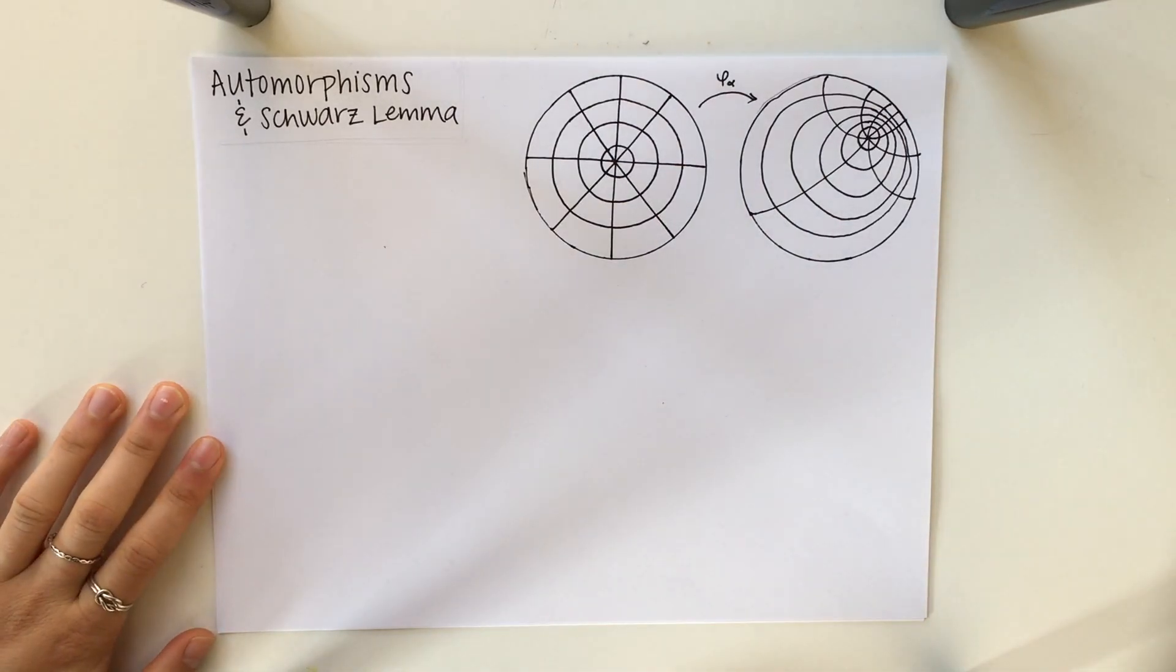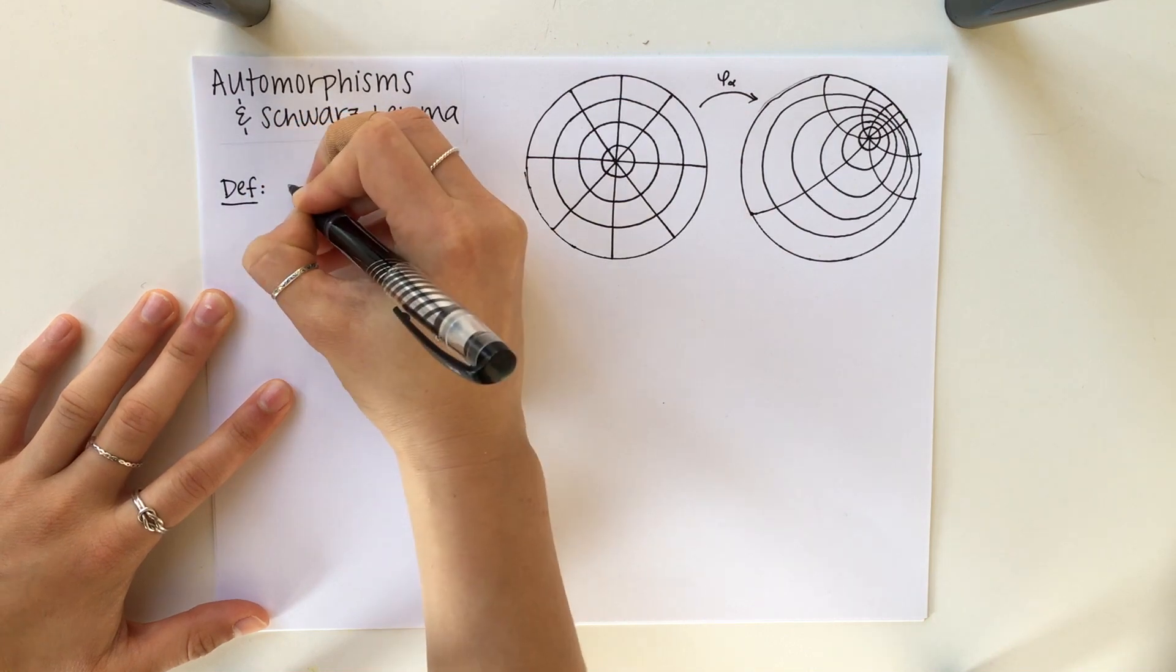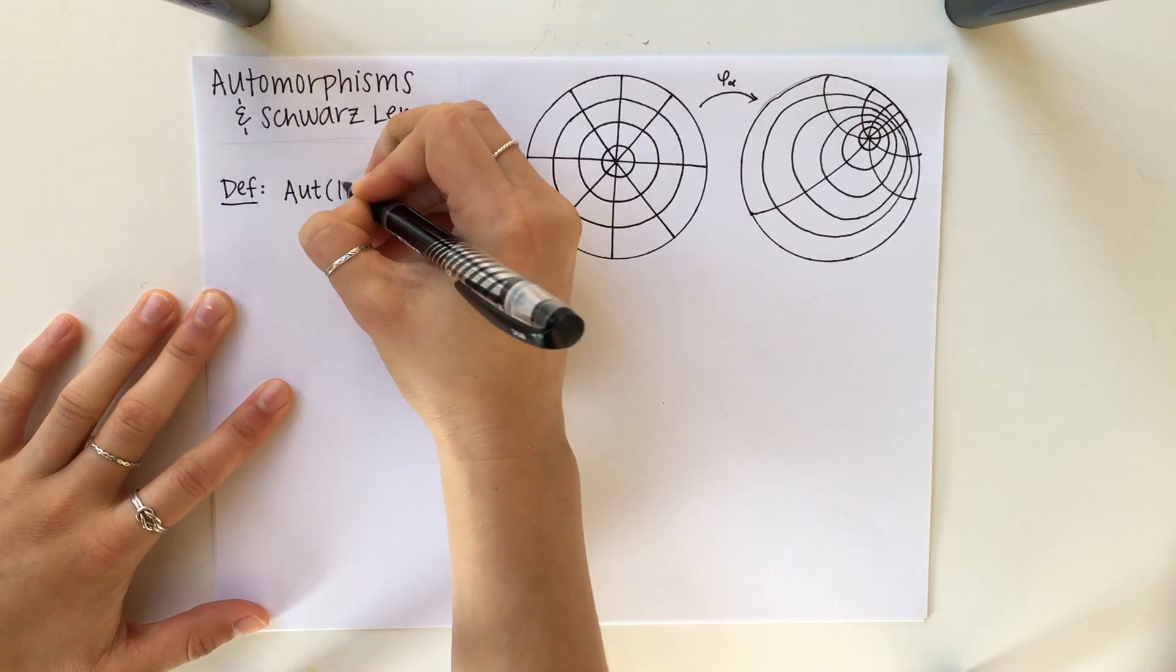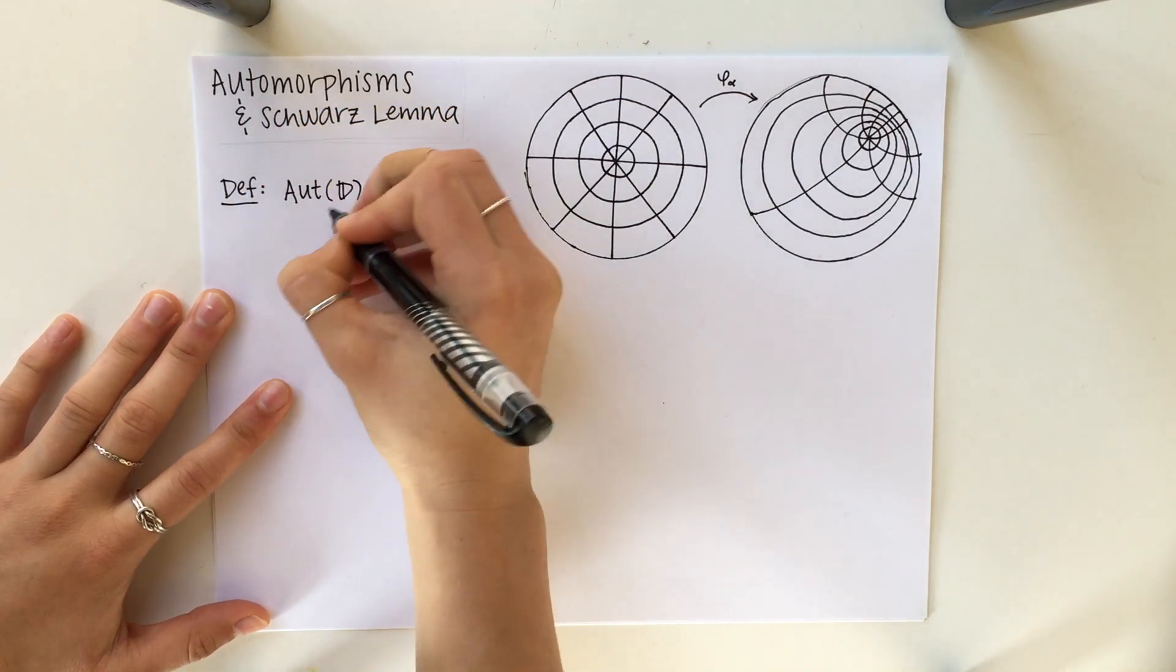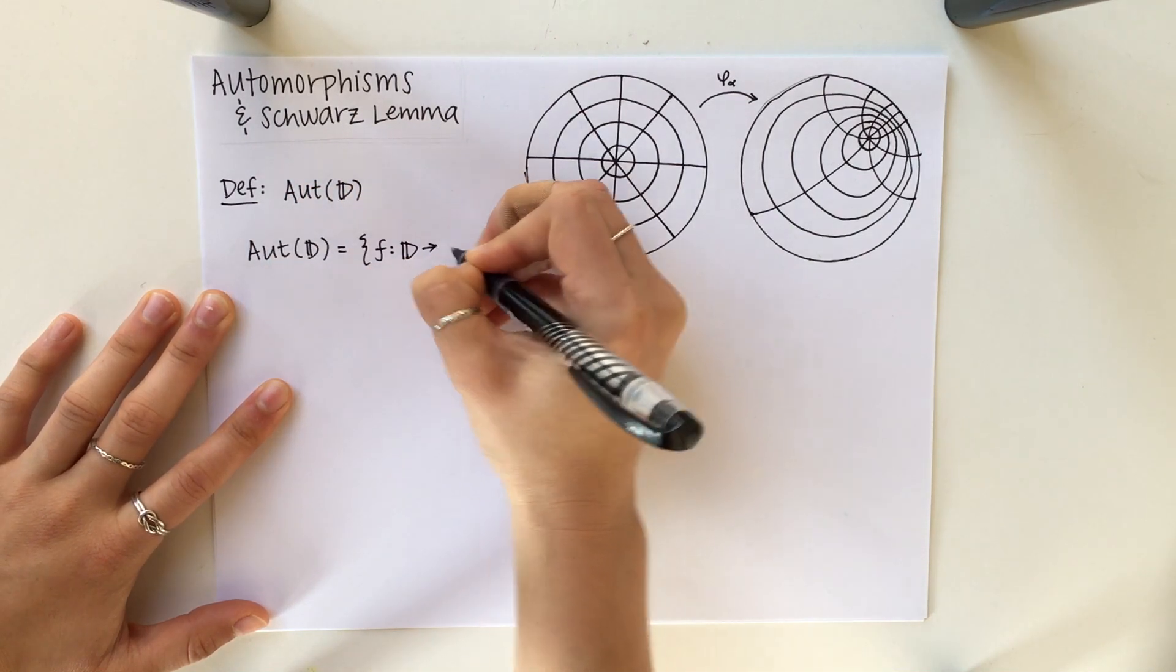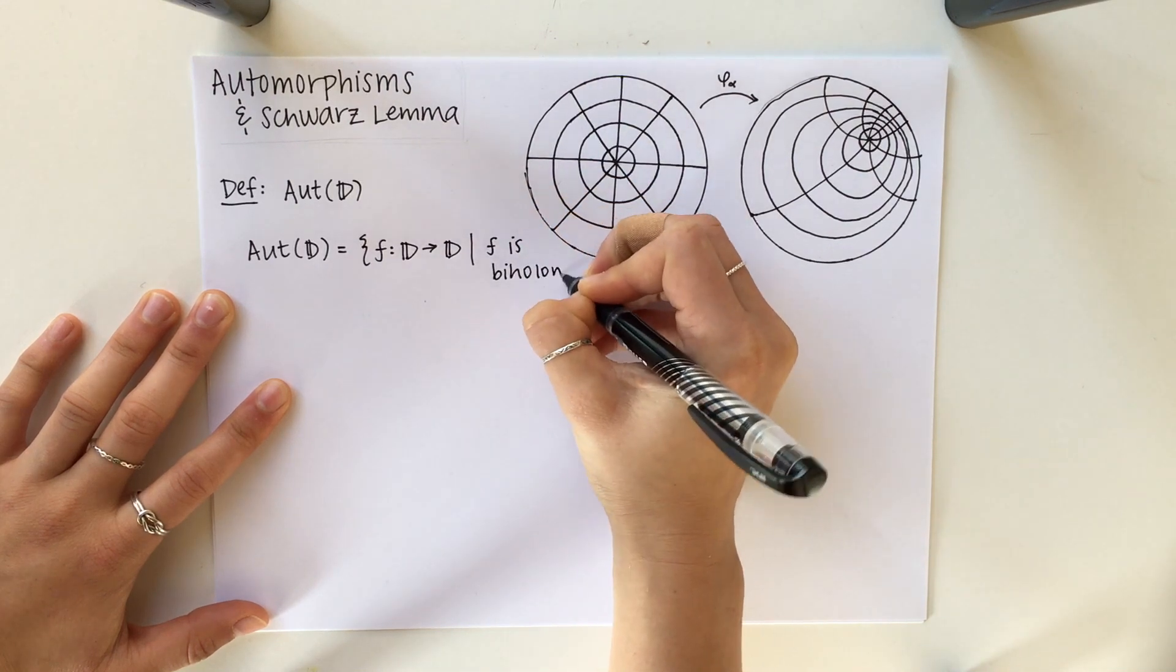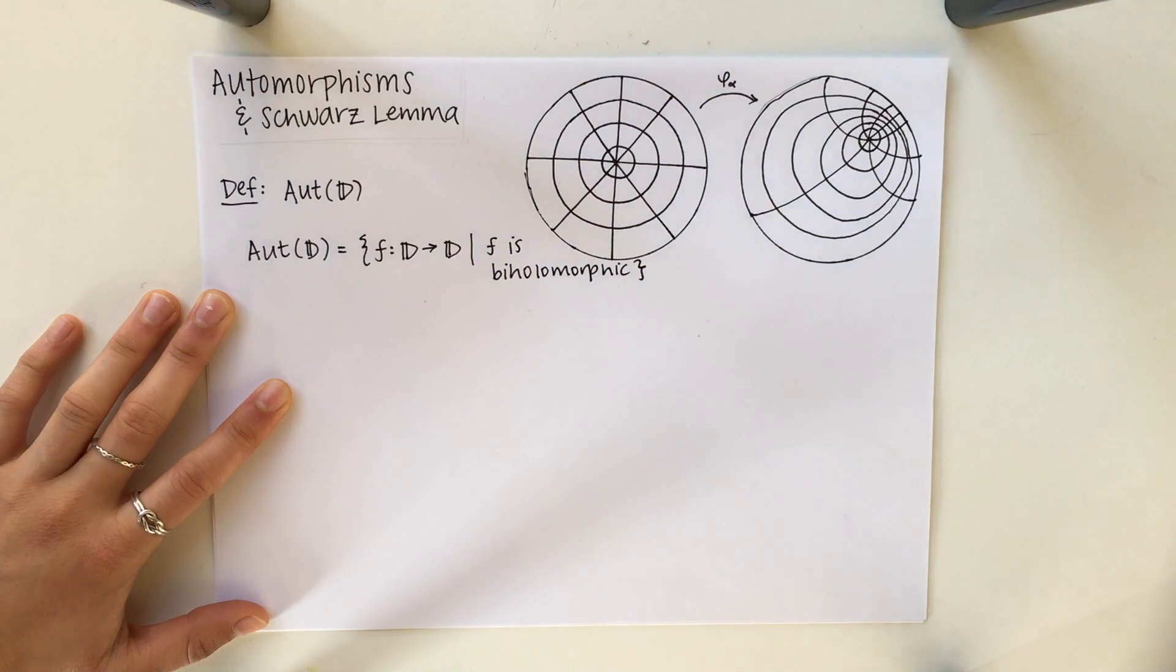This video is all about automorphisms and Schwartz Lemma. We'll start with the definition of an automorphism specifically with the unit disk. However, this definition can be generalized to any open subset of C. So, automorphism of the unit disk is the set of all functions that map the disk to itself such that F is biholomorphic.